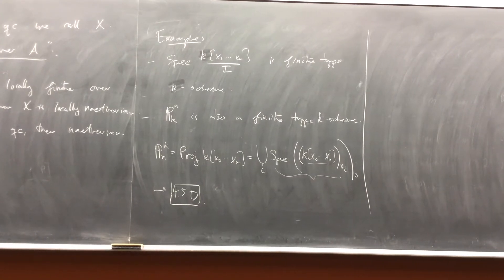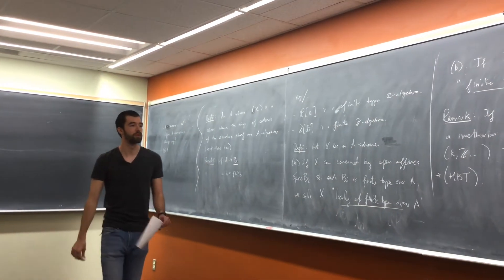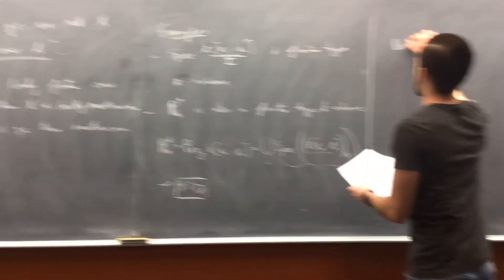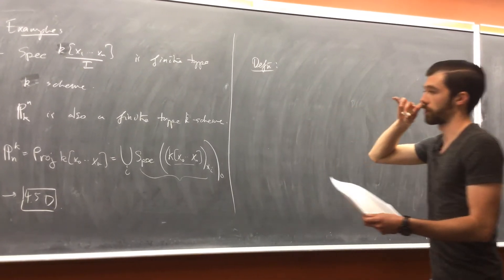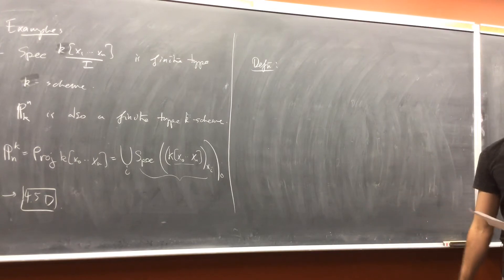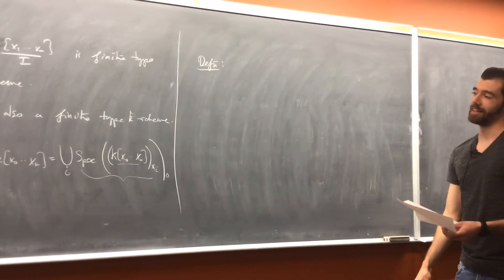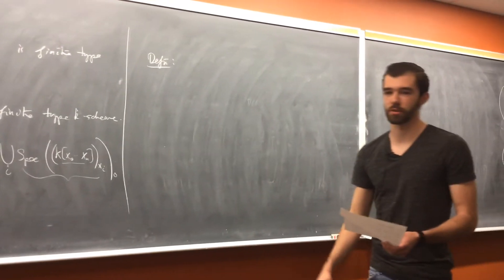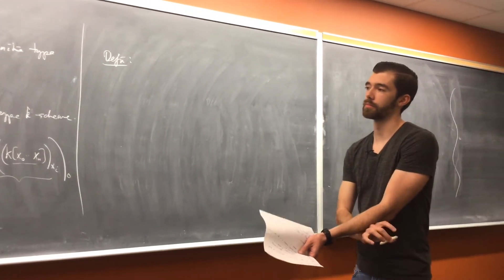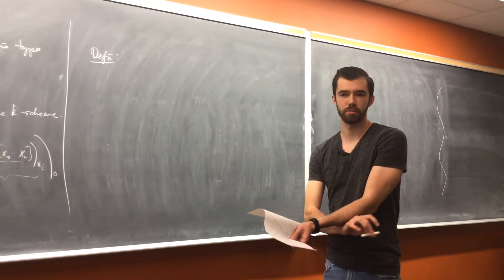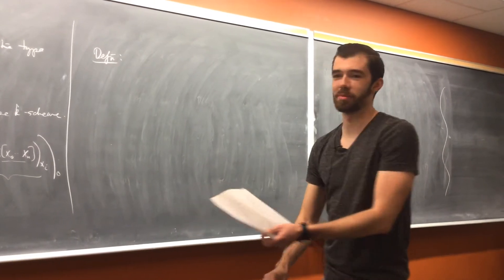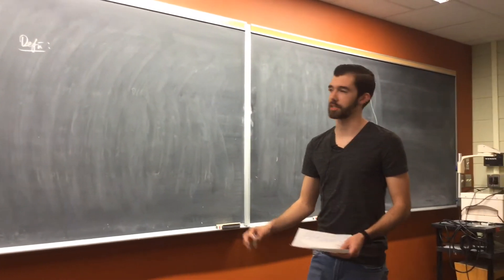So moving along with this sort of definition type stuff, we'll want to define affine varieties. Apparently we're not going to define a variety until somewhat later — I think it's section 10 — so for now we're just going to define an affine variety. Apparently we need to exclude abominations, which kind of terrifies me.